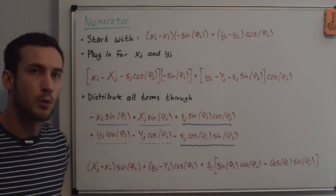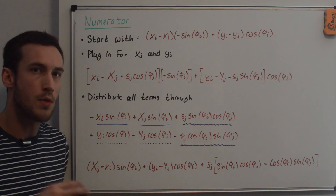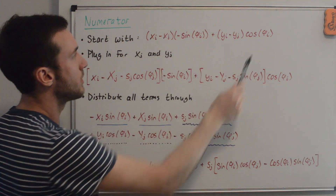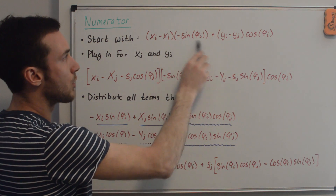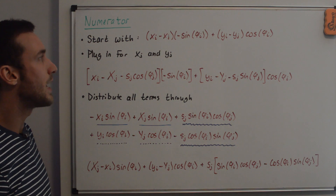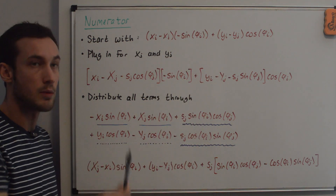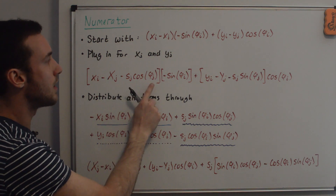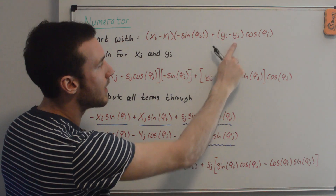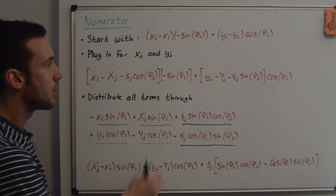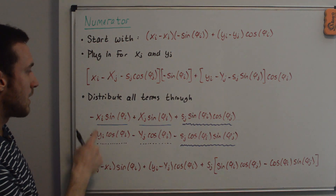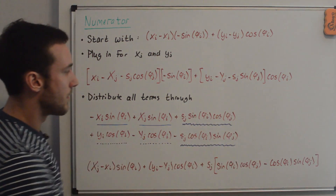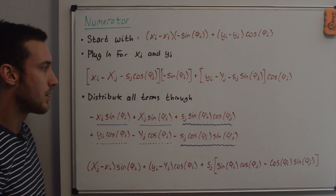The integral expression is correct but not yet in an easily solvable form. The goal over the next few whiteboards is to put it into a solvable form — first the numerator, then the denominator. Starting with the numerator: plugging in -sin(phi_i) and cos(phi_i) for the delta terms, then substituting x_j = X_j + s_j cos(phi_j) and y_j = Y_j + s_j sin(phi_j), we have (x_i - X_j - s_j cos(phi_j)) and (y_i - Y_j - s_j sin(phi_j)). Distributing through gives several terms from the first and second brackets.